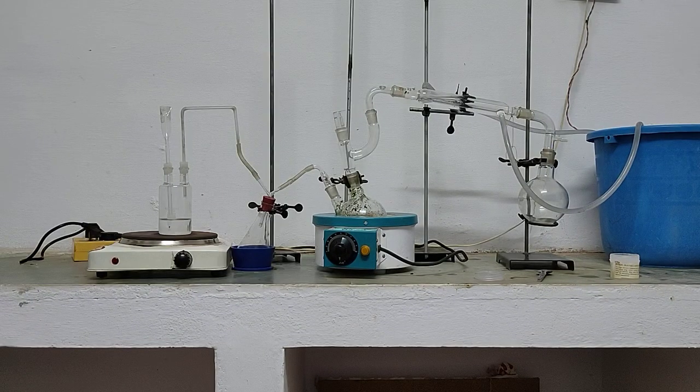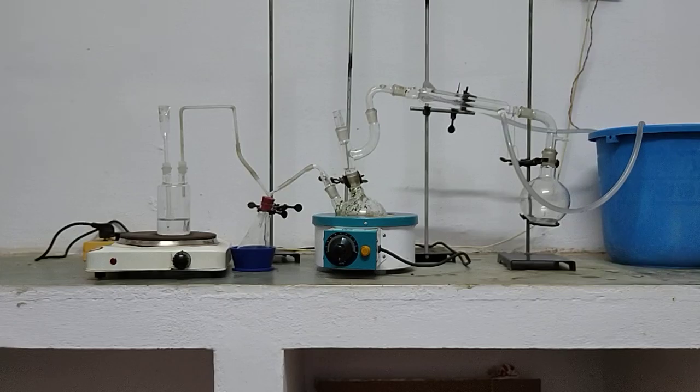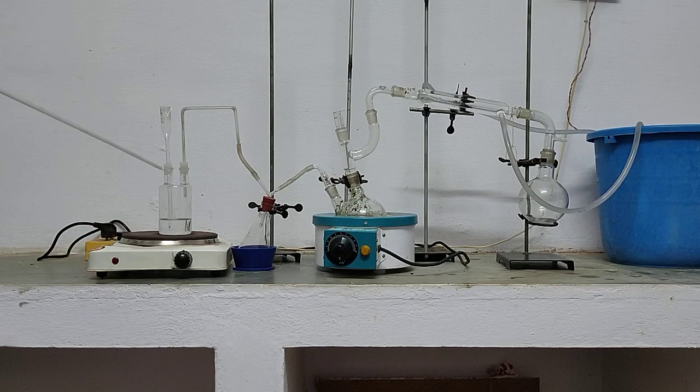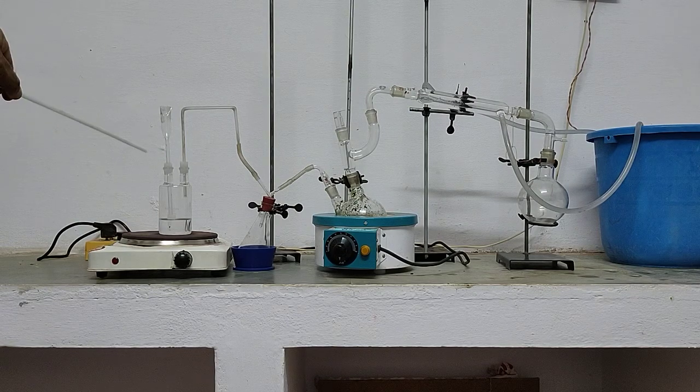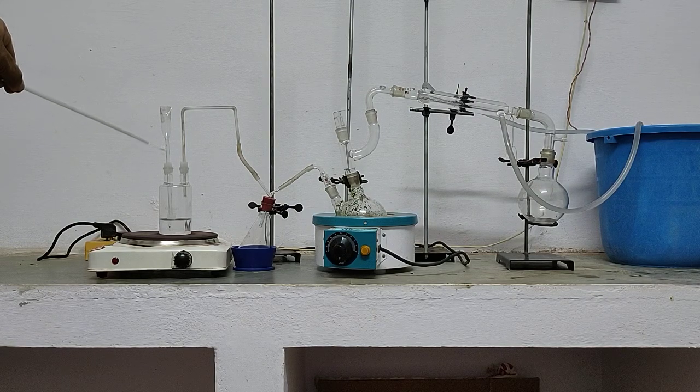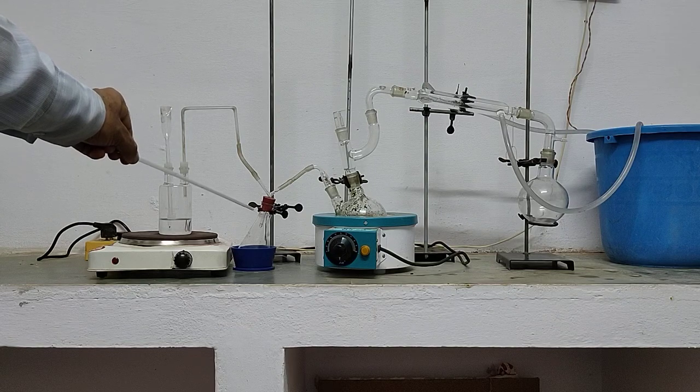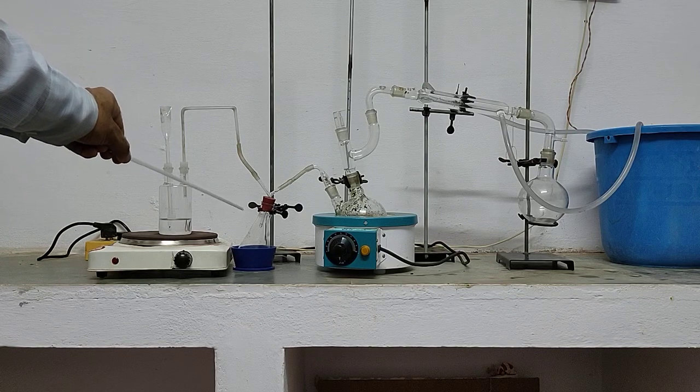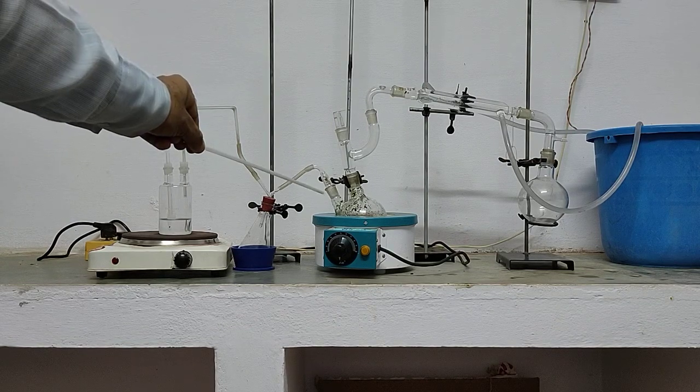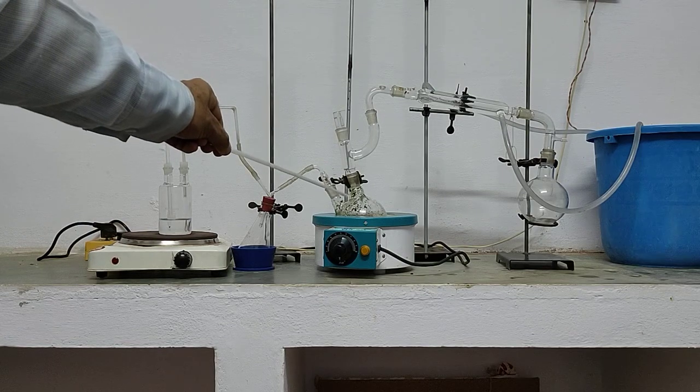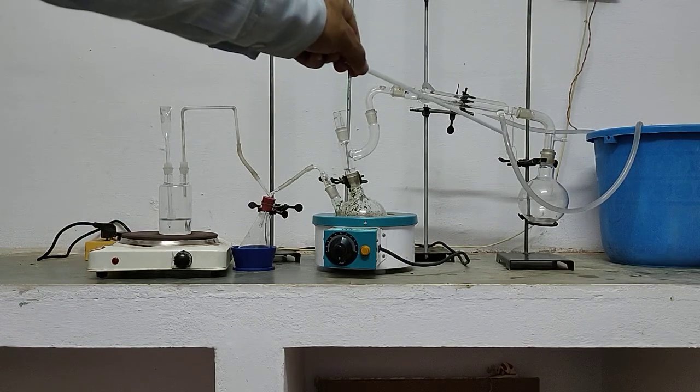Switch on the steam distillation. Start the steam generator. The setup includes a safety rod, steam tube, round bottom flask, water condenser to condense steam, and receiver flask.